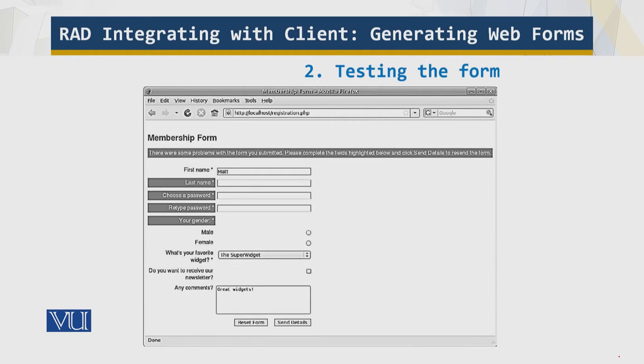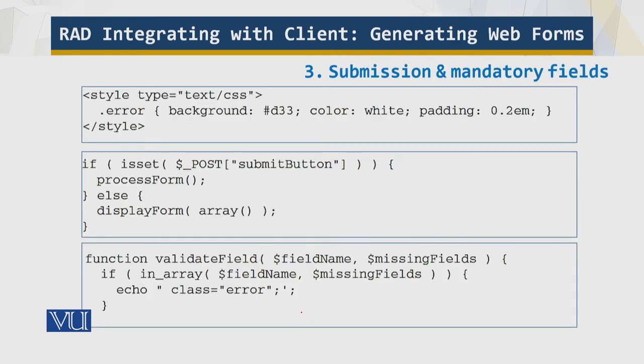Now browse the script URL in your web browser and you will see a blank registration form as shown on the screen. Try submitting an empty form by clicking the 'Send Details' button — you should see an error message with the missing required fields highlighted. If you fill in some values and resubmit, the script keeps checking to see if you filled in the required fields. If not, it re-displays the form including any data you have entered and highlights the missing fields.